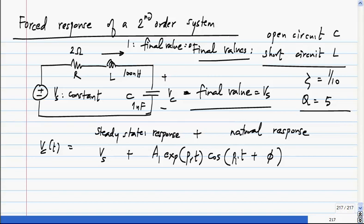Let us say I tell you that this initially carries 2 volts and this current initial is 5 milliamps. How would you find the constants A1 and phi? At t equal to 0, I will get Vc of 0, which is 2 volts, is Vs plus A1 cos phi.